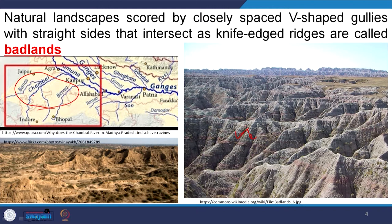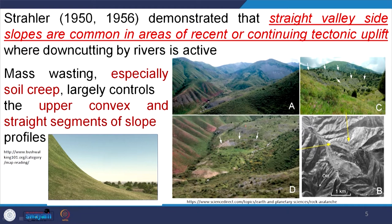Strahler (1950–1956) demonstrated that straight valley-side slopes are common in areas of continuing tectonic uplift where downcutting by rivers is active. Taking the Himalayas as an example: comparing profiles from the Himalayas and Eastern Ghats, the Himalayan profile has straight crests and straight slopes on both sides, whereas the Eastern Ghats profile is gentler. Areas undergoing active tectonism with active river incision are very prone to developing straight slopes.